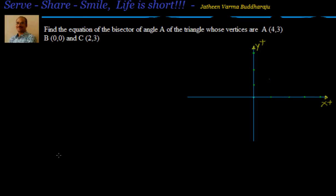Hello friends, welcome back, hearty welcome to you. In this session let's try to solve an example where we will be using two-point form and also leveraging the angular bisector concept. Find the equation of the bisector of angle A of the triangle whose vertices are A, B, C.